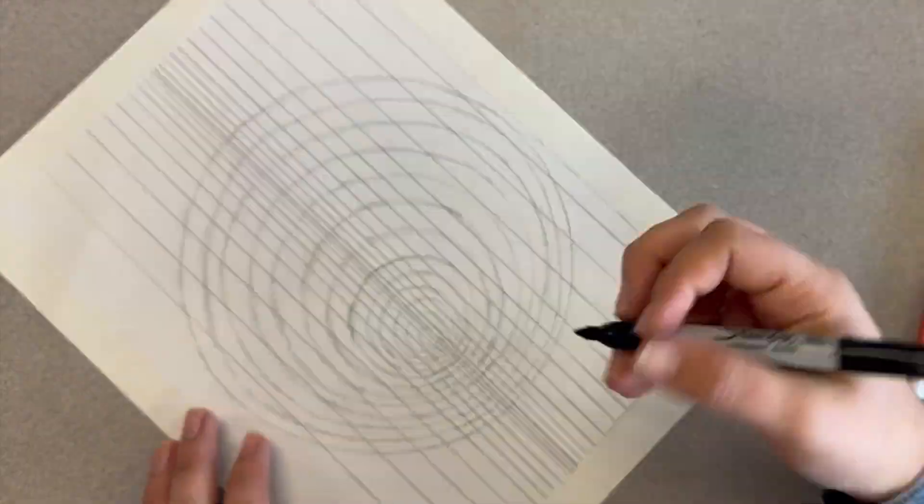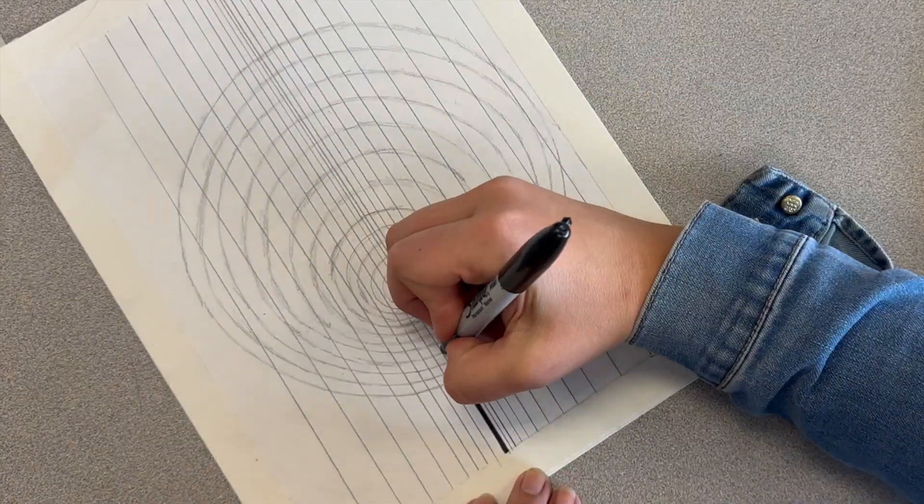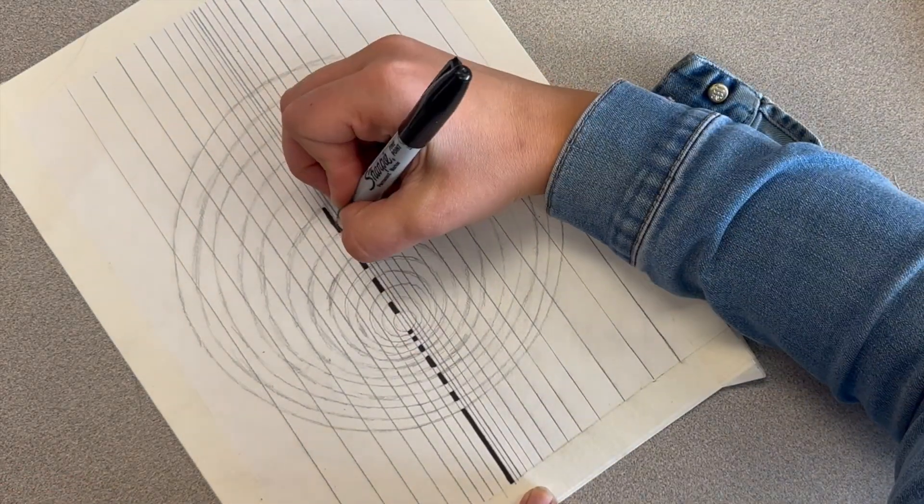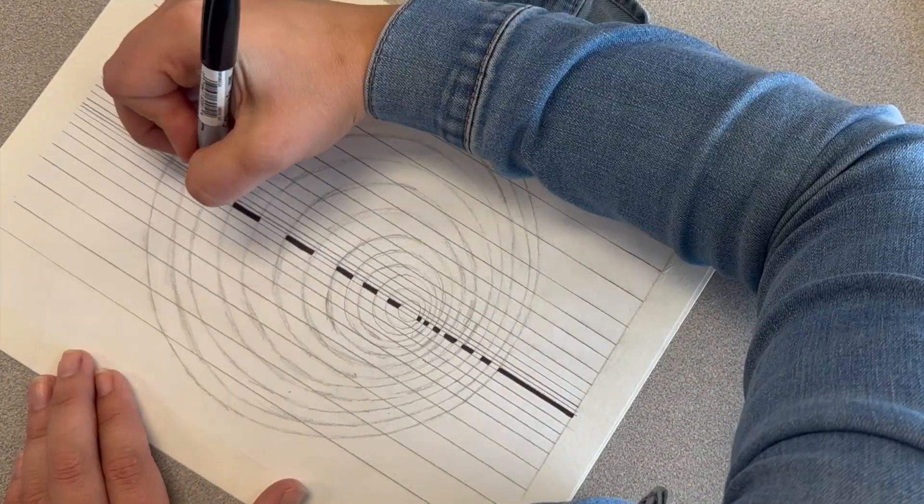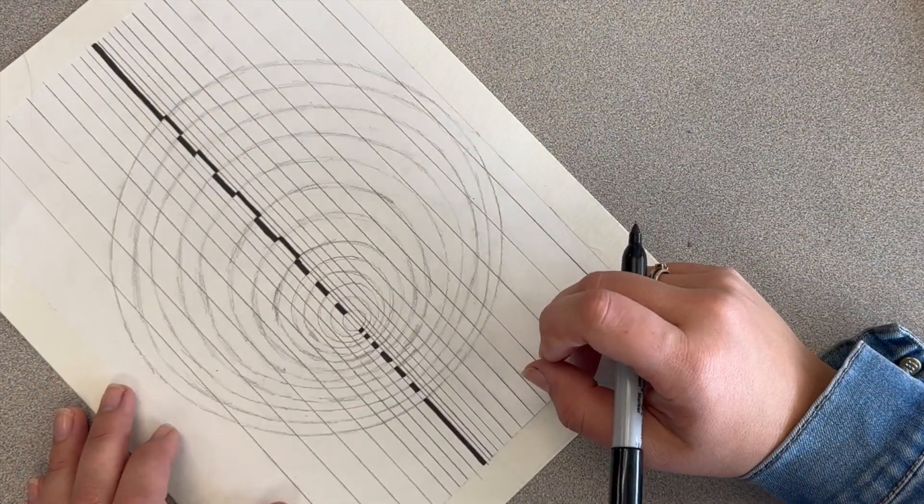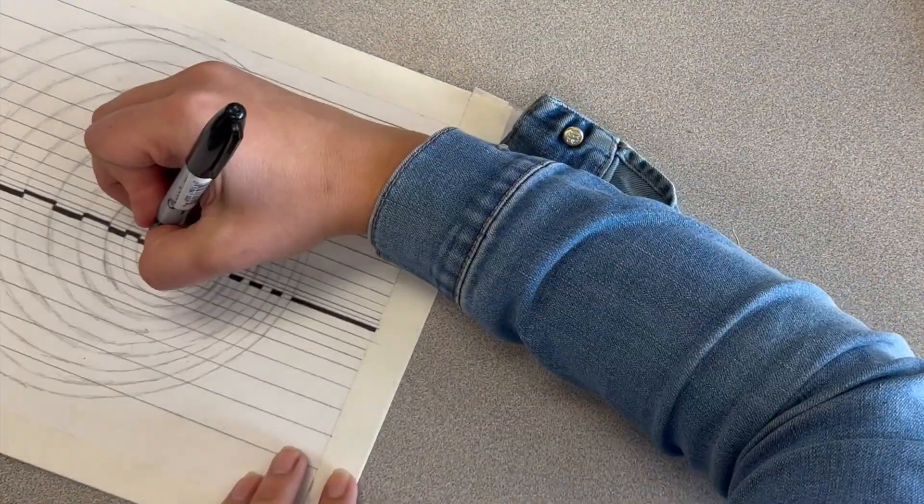Once your lines are done, you're going to be ready to start with Sharpie, and that's what's really going to create your illusion. You need to start in your center point in one of your super skinny areas. You're going to use your Sharpie to fill in one little section. After you fill in one section, you will skip the next one, and then fill in the one following it. So we're going every other.